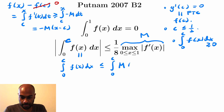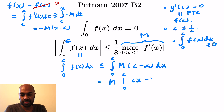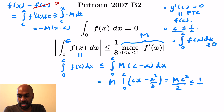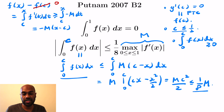Multiplying through by negatives, the integral in question is less than or equal to the integral from 0 to c of M times the quantity c minus x dx. Evaluating this integral from 0 to c of cx minus x squared over 2 gives M times c squared all over 2. Since c is bounded above by one-half, this is bounded above by one-eighth M, which is exactly what we wanted to prove. The key was labeling things, making relationships, and employing the fundamental theorem of calculus.